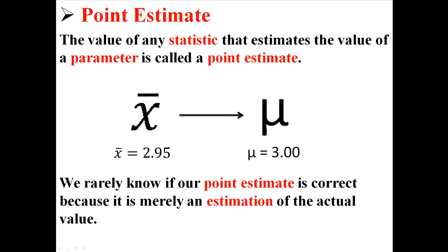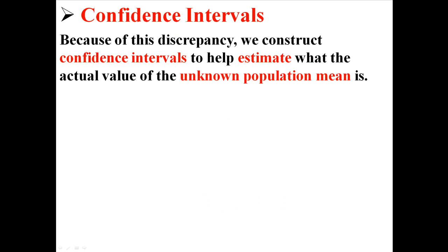We rarely know if our point estimate is correct because it's merely an estimation of the actual value, which would usually be impossible for us to find. So because of this discrepancy, we construct confidence intervals to help estimate what the actual value of the unknown population mean is.